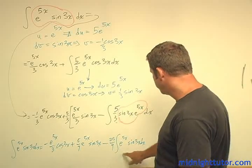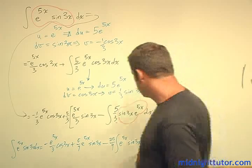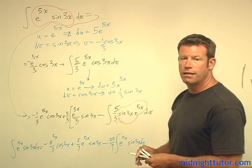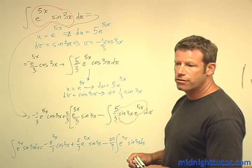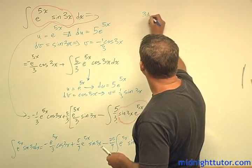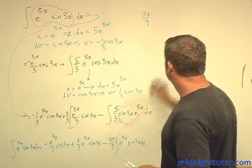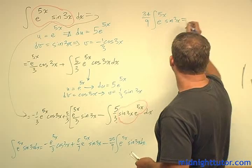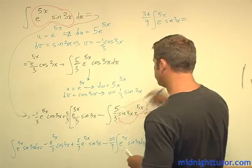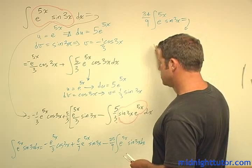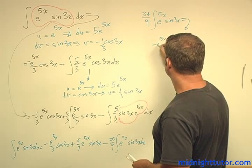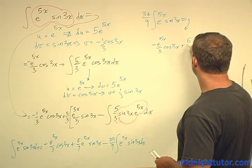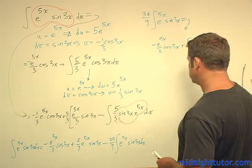So, the solution's at hand, right? Here we have a term with the integral, e to the 5x, sine 3x, dx. Here we have a term like that. So, we just have to add this. So, 1 plus 25 ninths is how many? 9 ninths, 9 and 25 is 34. So, we're going to have 34 ninths, integral, e to the 5x, sine 3x, is equal to this stuff. Minus e to the 5x, over 3, cosine 3x, plus 5 ninths, e to the 5x, sine 3x.